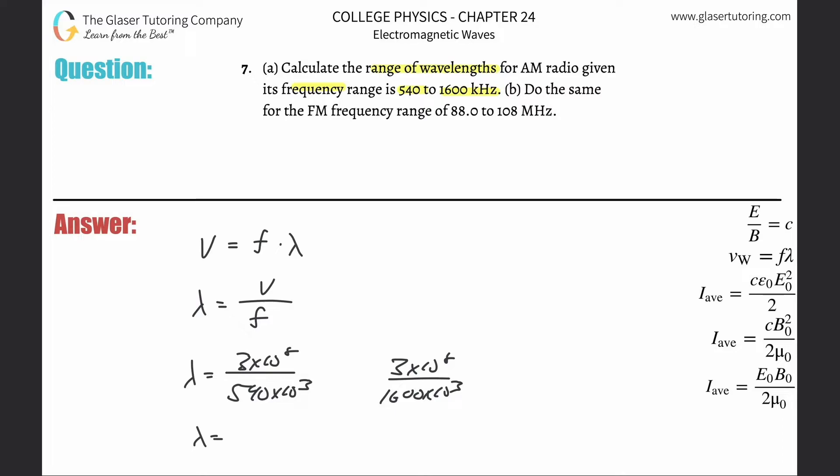So here's going to be the two wavelengths now. This is going to be three times 10 to the eight divided by 540 times 10 to the third, and here we get a value of about 556 meters.